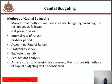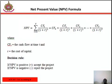The methods of capital budgeting include: net present value (NPV), internal rate of return (IRR), payback period, accounting rate of return (ARR), profitability index, equivalent annuity, and reduction analysis. As far as this course is concerned, we start with net present value, which we refer to as NPV.